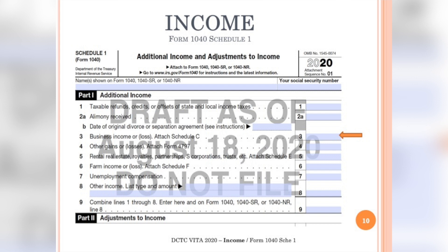Consult Publication 4012, pages D14 through D20, for screenshots of how to navigate business income and expenses in TaxSlayer software. Lines 4, 5, and 6 are all out of scope for our VITA program. However, Line 7, Unemployment Compensation, is within scope, so let's talk about it.